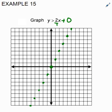After that, I need to draw my line. And I need to know whether it's going to be solid or dashed. So here, we have just a greater than symbol. And because it's just greater than, it's going to be a dashed line. There is no equal to, so it's not a solid line. It's just a dashed line. And we put our arrows on the end because the line keeps going.